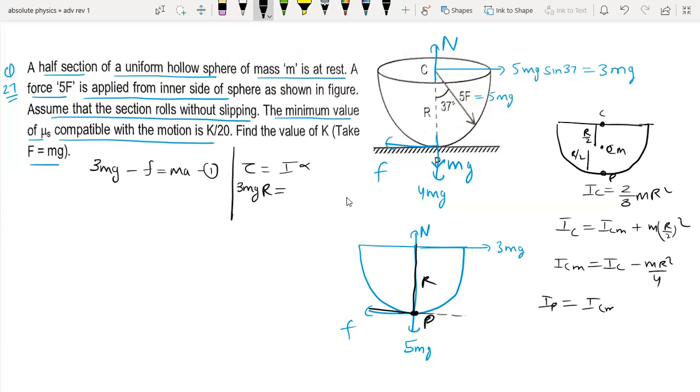IP is equal to IC because center of mass was symmetrical with two points, so this is 2 by 3 mr square. So this is 2 by 3 mr square alpha, so alpha equal to 9g by 2r.